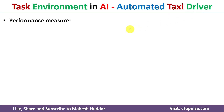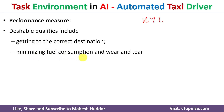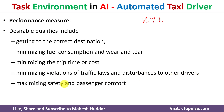The performance measure of an automated taxi driver includes getting to the correct destination. Let us assume that the passenger has set the destination as XYZ — the AI agent, that is the automated taxi driver, should go to XYZ; only then will it be called a rational agent. Similarly, minimizing fuel consumption and wear and tear of the car, minimizing trip time and trip cost, minimizing violation of traffic laws and disturbance to other drivers, maximizing safety and passenger comfort, and finally maximizing profits are all performance measures.